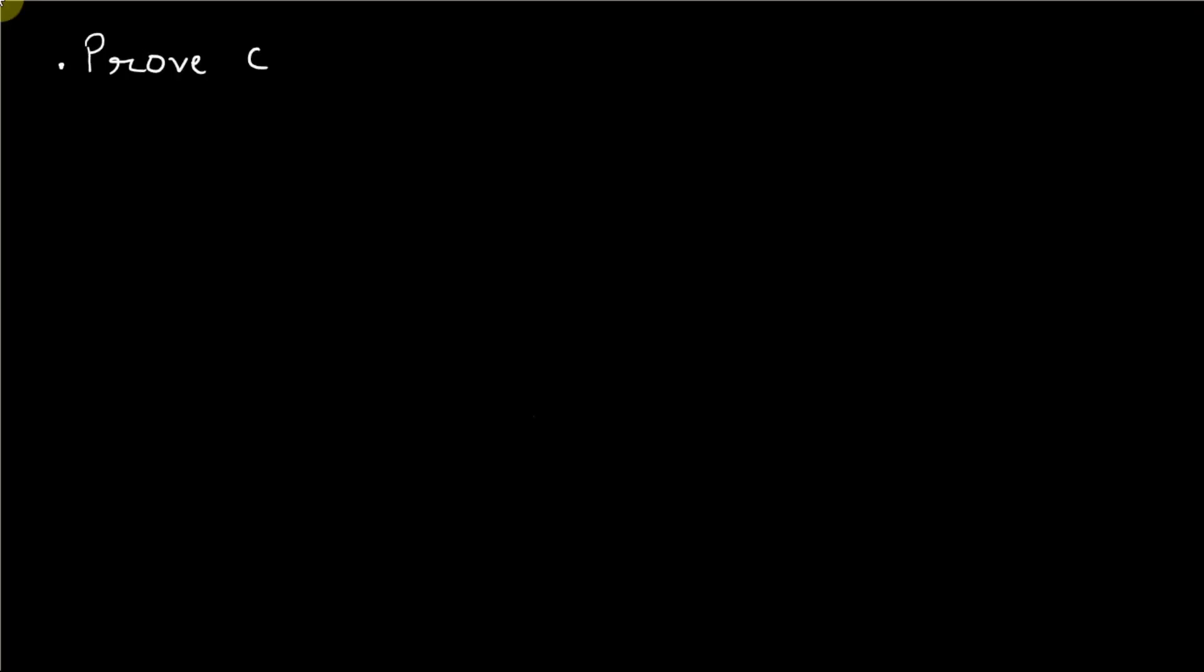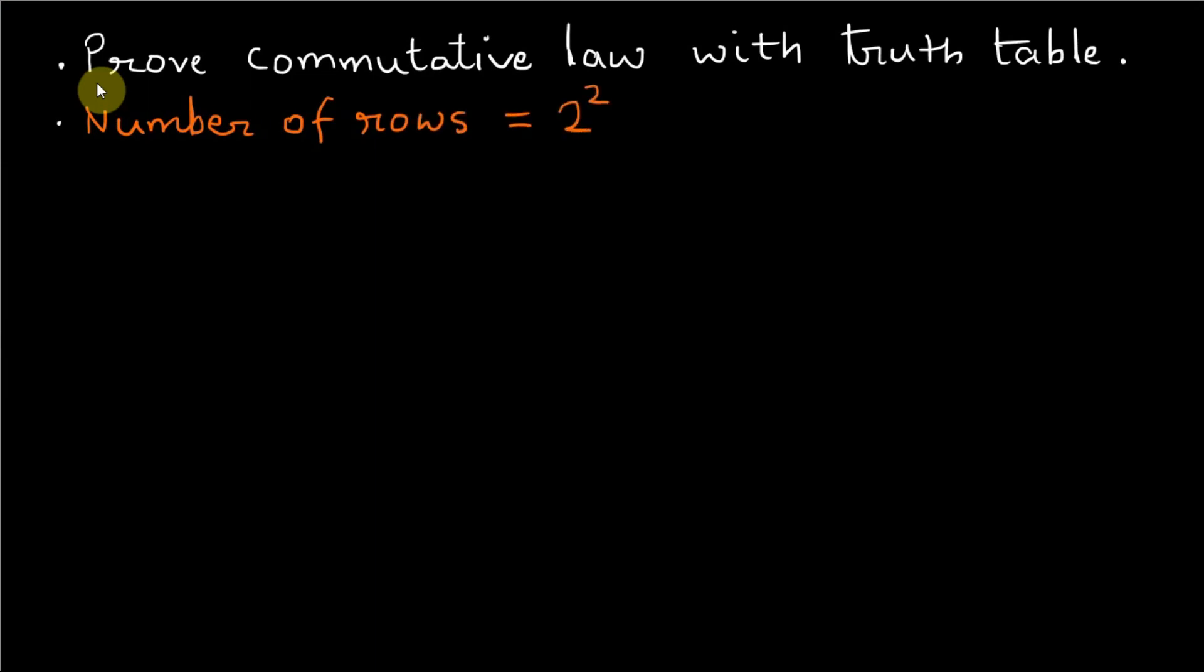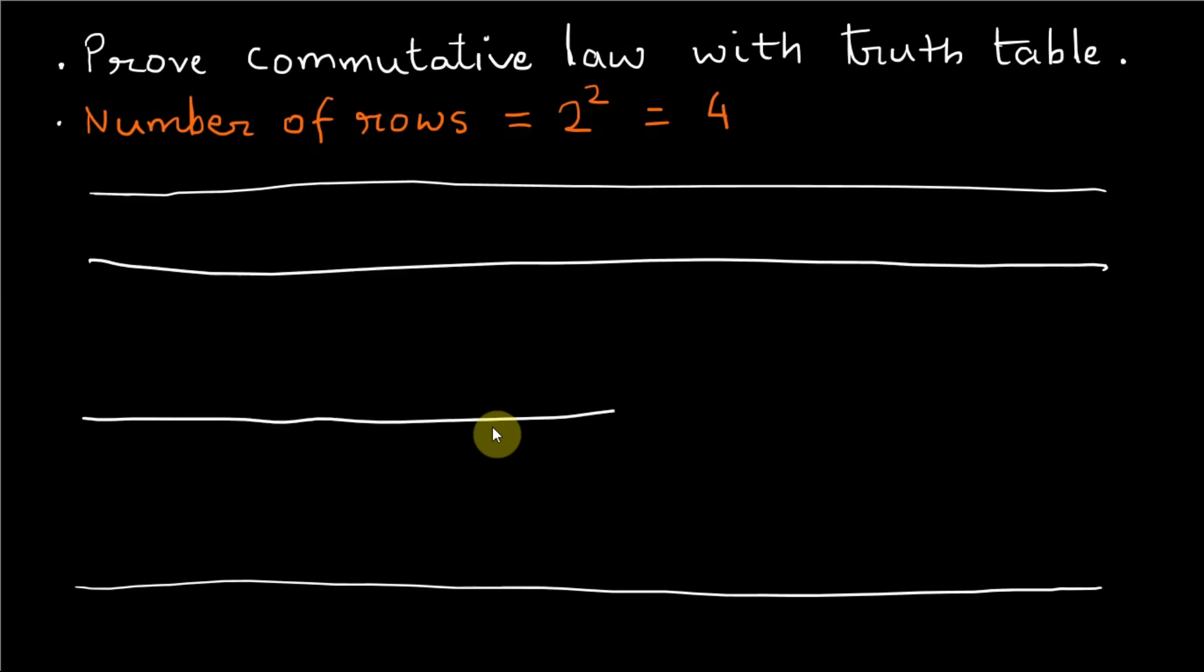We try to prove the commutative law with the help of truth table. Now there are two variables, which means number of rows in the truth table is 2 raised to 2 equals 4. I will pause here for a minute to draw the table first.